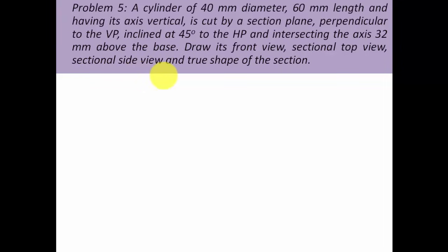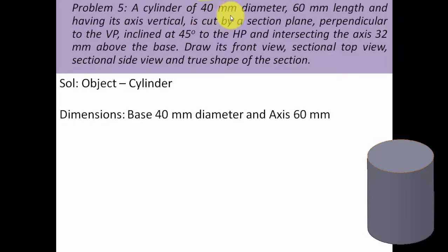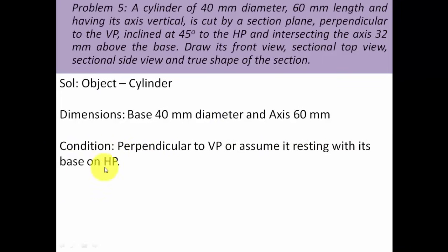We're going to be extracting data from this entire description. The object is a cylinder having base diameter of 40 and height of 60. The condition is that its axis is vertical, meaning the circular base is horizontal. We're assuming the cylinder is resting with its base on the horizontal plane. Since the base is on the HP, the true shape of the base can only be seen from the top, so we'll begin by making the top view first, then its corresponding front view.